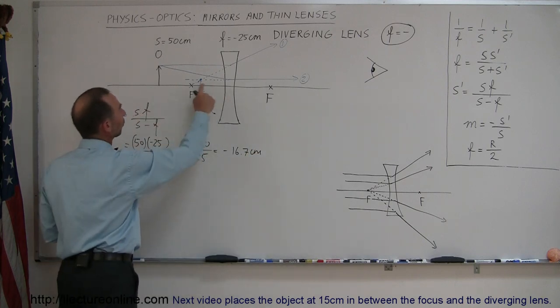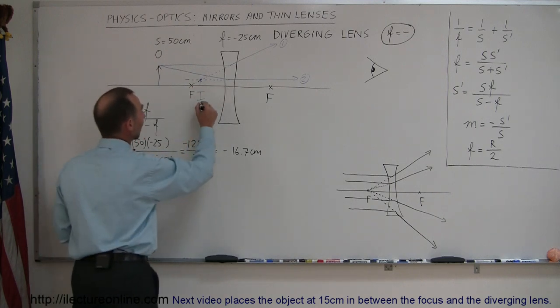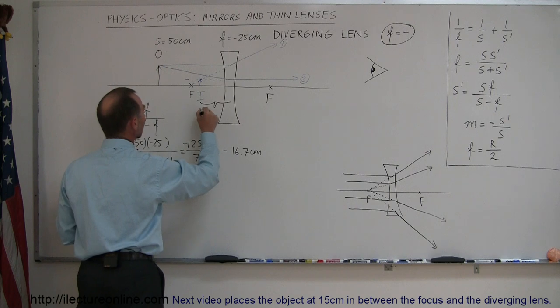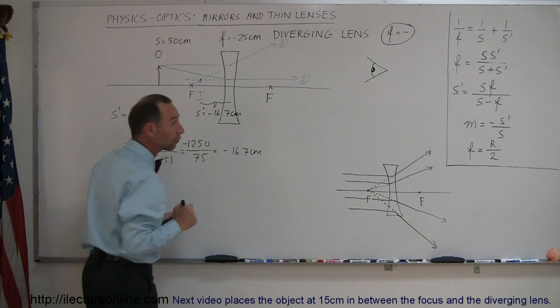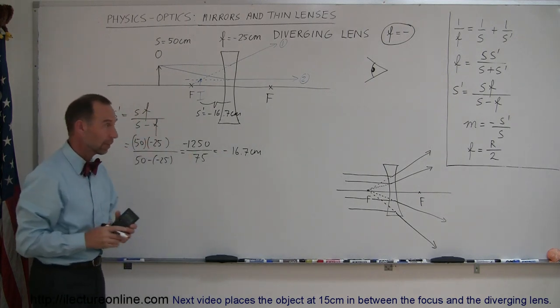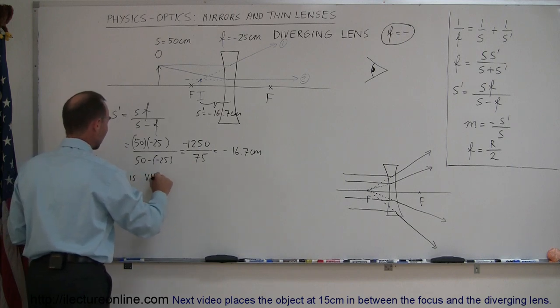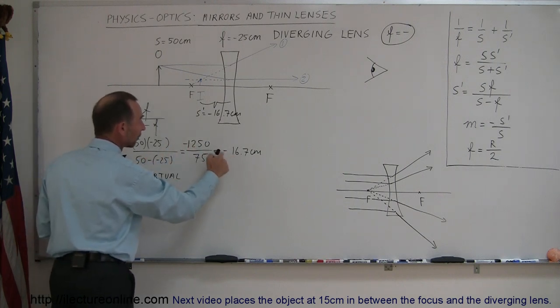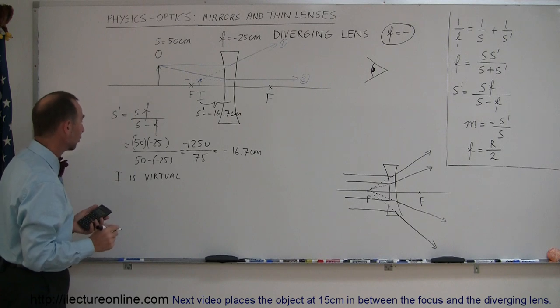You can see here, if the focal point is 25 centimeters away from the lens, you can see that the image is about that distance. So we found S prime here, S prime is going to be negative 16.7 centimeters. Negative, of course, means that it's in front of the lens, and therefore that makes that a virtual image. So the image is virtual because it's in front of the lens. It's not a real image, and that's indicated by the negative sign in front of the image distance.